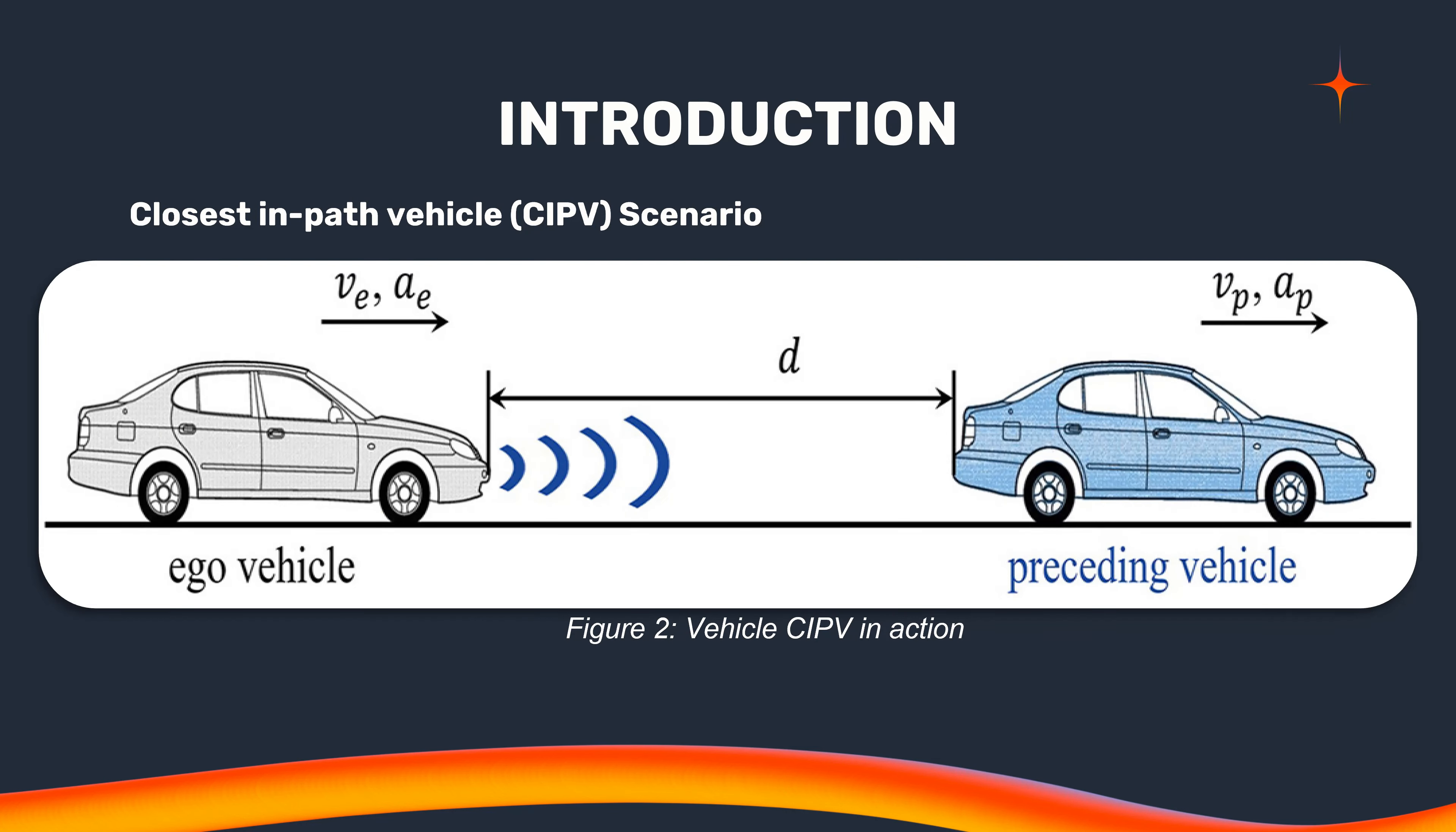When the preceding vehicle is in the driving lane, it becomes the closest in-path vehicle, or CIPV, and the ACC tailors the speed accordingly. If no CIPV is detected, the system smoothly transitions to the desired velocity.